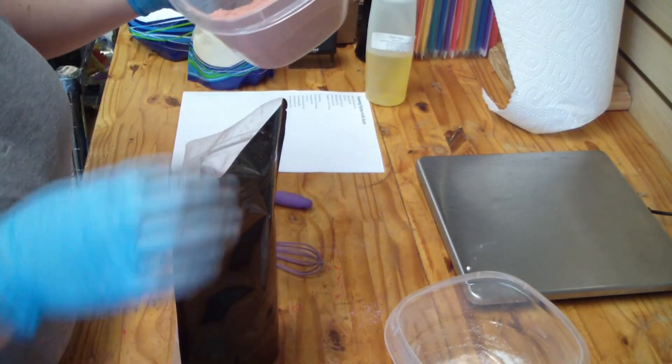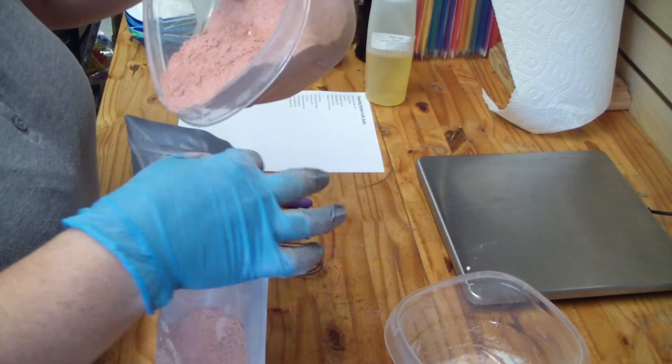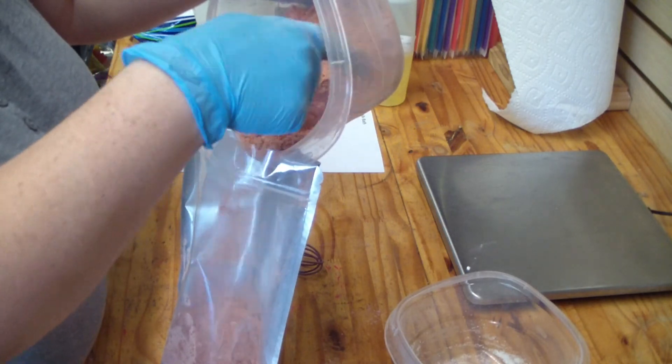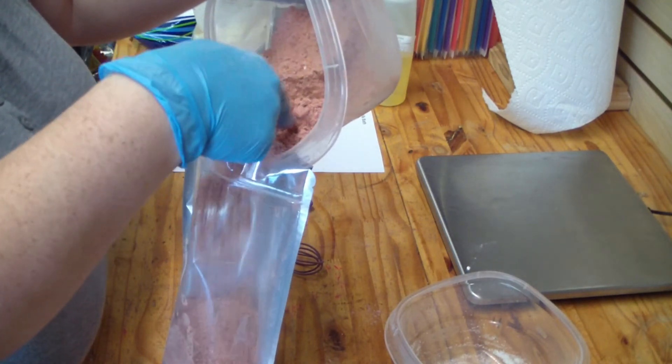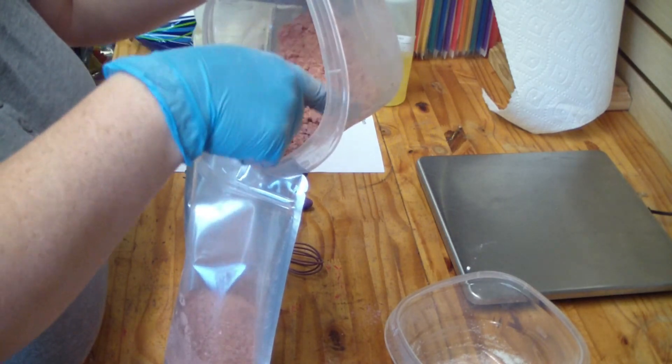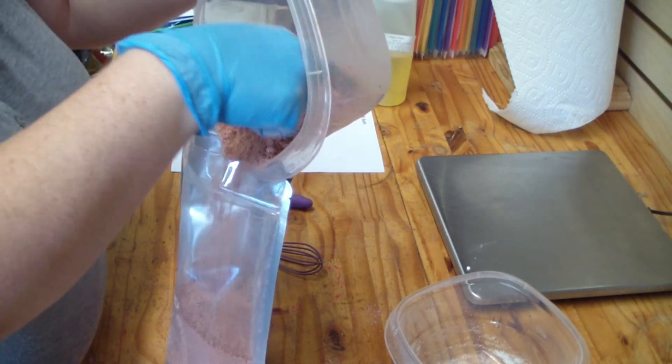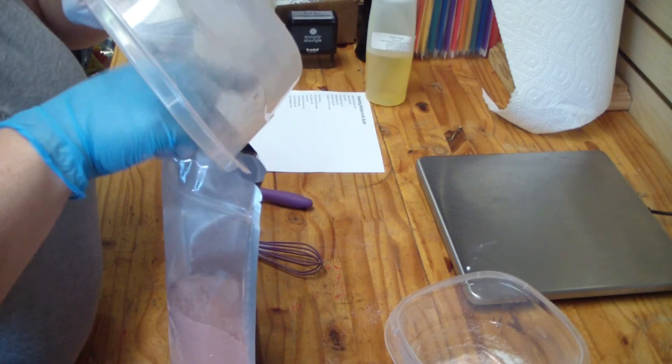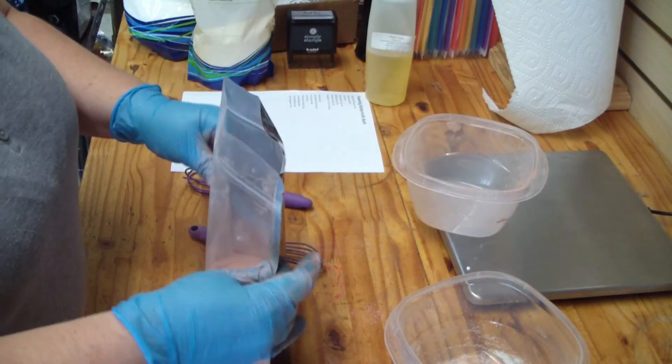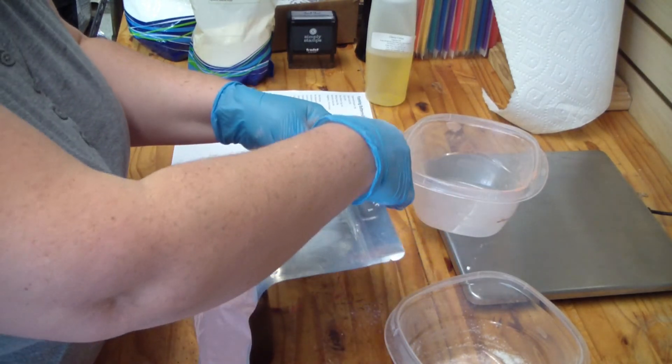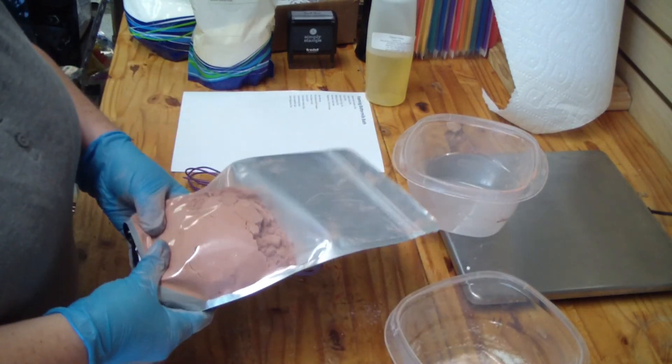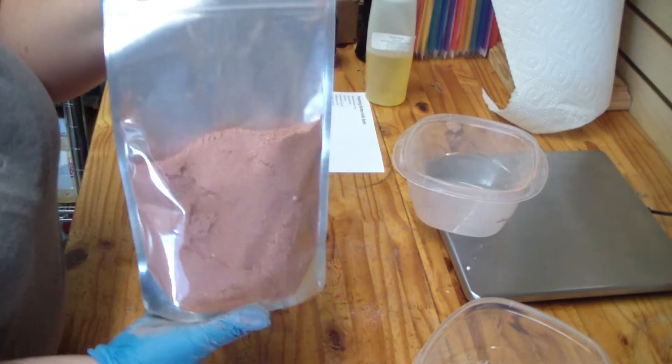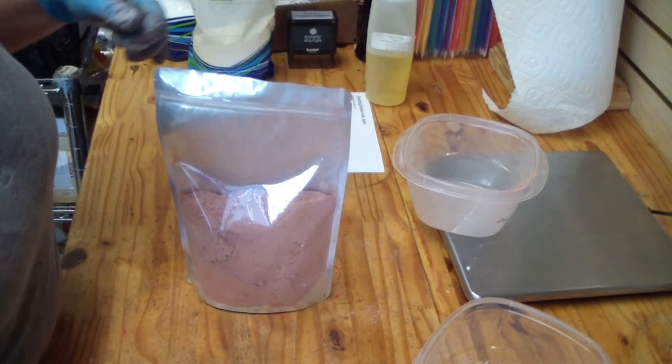You can get them on Amazon or eBay. Fairly inexpensive, the impulse sealers, like I'm thinking less than $50, they made me like $30. And as you can see, this bag easily holds one pound of product. For something like this, you probably could do upwards of two pounds in the bag. But then you just seal it and label it and it's good to go for your customers.